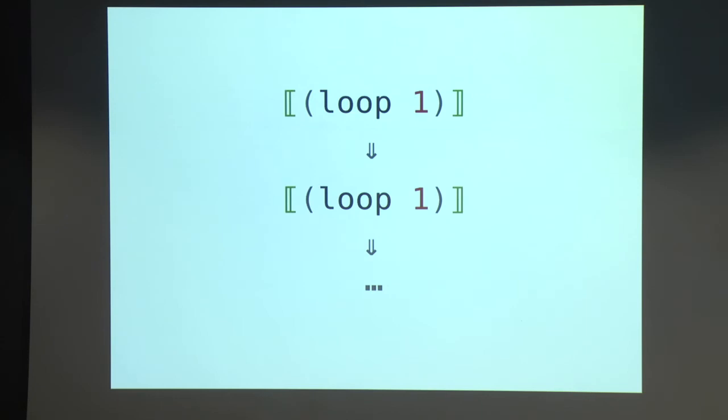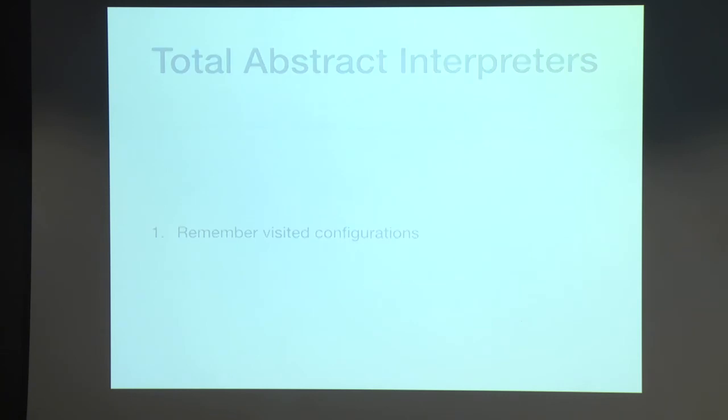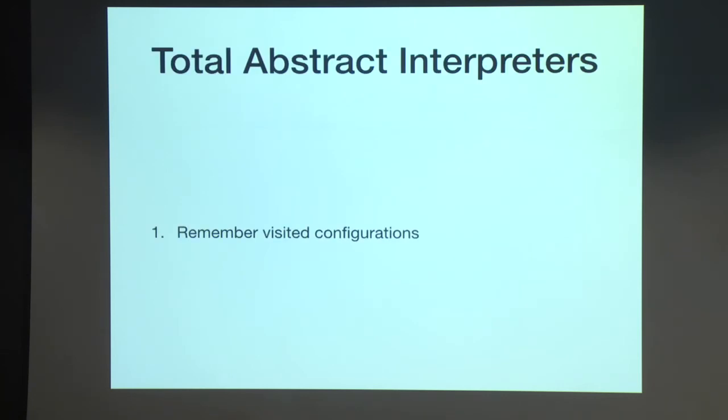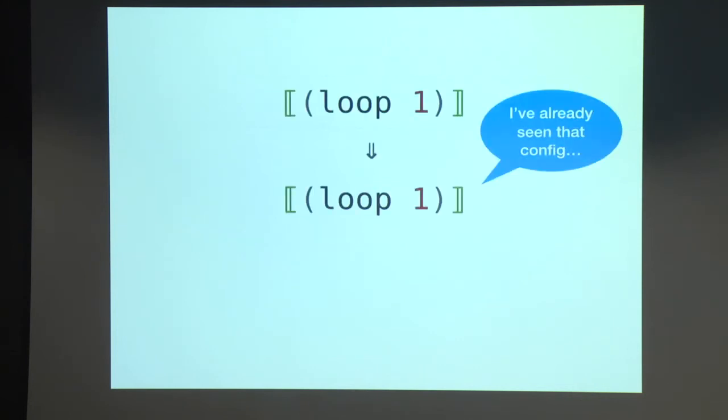And most of the focus in the paper, and what I'll focus on now, is how to take this definitional abstract interpreter and make it terminate. So if you look at what happened in that looping example, the issue was that we were evaluating loop of one and the interpreter performed some work and it got to the same point where it was interpreting the loop of one. And you're probably thinking there's an easy fix for this. And this is the first step in our approach, which is we need some way of remembering visited configurations.